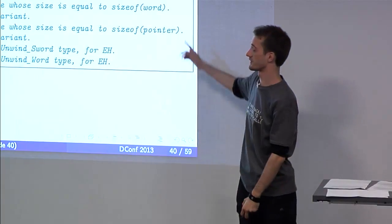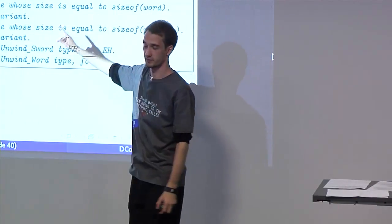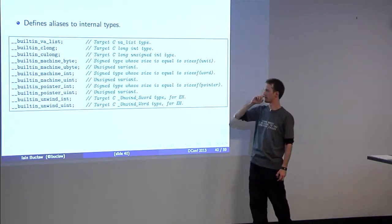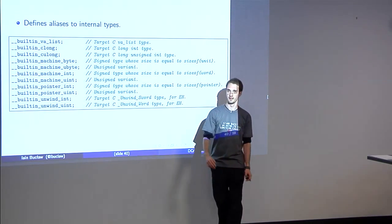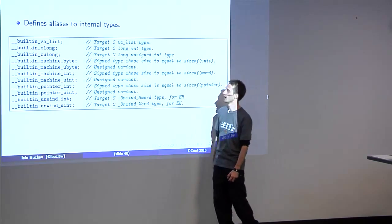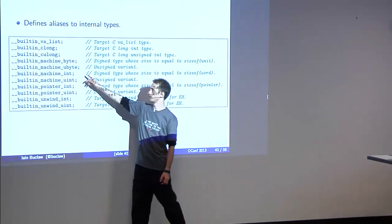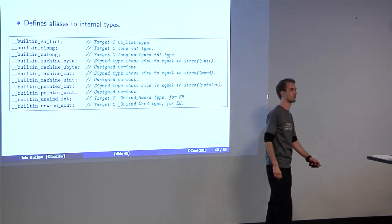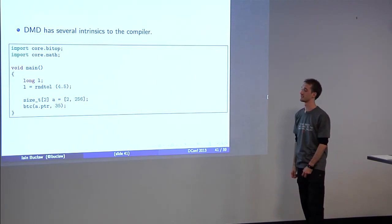Yeah, as I was saying, we define aliases to internal types, just for convenience, so rather than having a load of version identifiers for this target, do this, you can just import gcc.builtins, and they're already there.